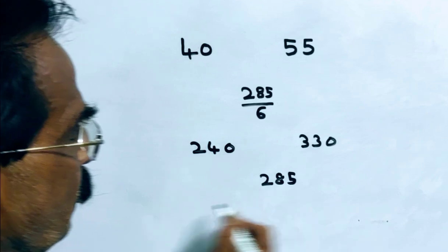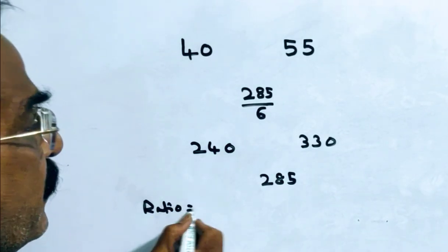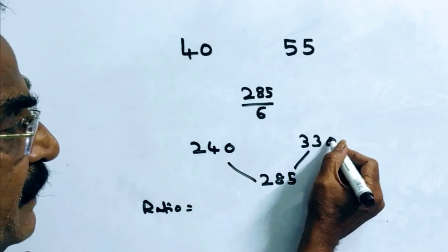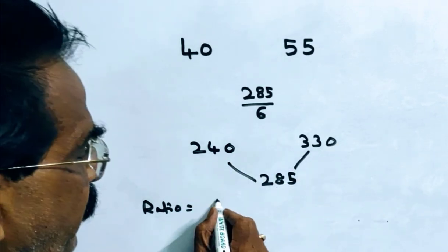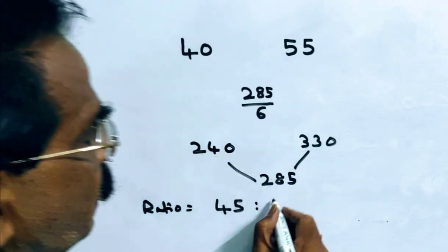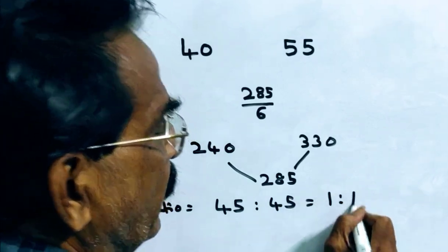Now the ratio is 330 minus 285 by 285 minus 240. 330 minus 285, 45 is to 285 minus 240, 45. That is equal to 1 is to 1.